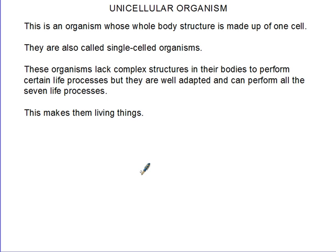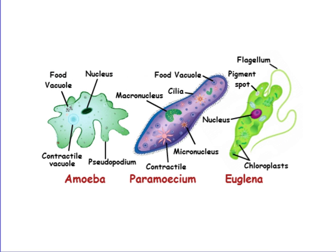Remember, we eat, our digestive system breaks the food down, and our cells absorb the nutrients. But for unicellular organisms, how do they do all of these? Let's look at how they do all these. There are three main examples.